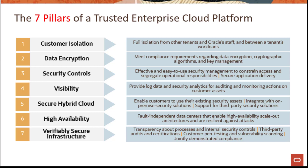Secure connection from on-premise to public cloud, i.e., secure hybrid cloud. High availability — fault-independent data centers within a region and across regions. And verifiably secure infrastructure includes transparency about processes and internal security controls that Oracle has implemented, as well as any kind of third-party audits and certifications.